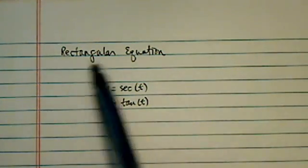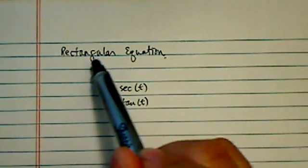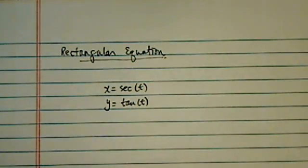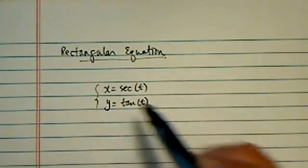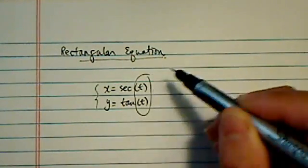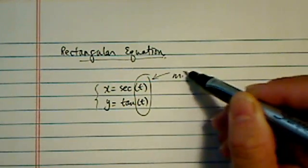Thank you for watching this clip on rectangular equation. I did a Google search on rectangular equation. It turned out just a fancy way to say when you have parametric equations, we want to get rid of the, shall we call it a middleman?